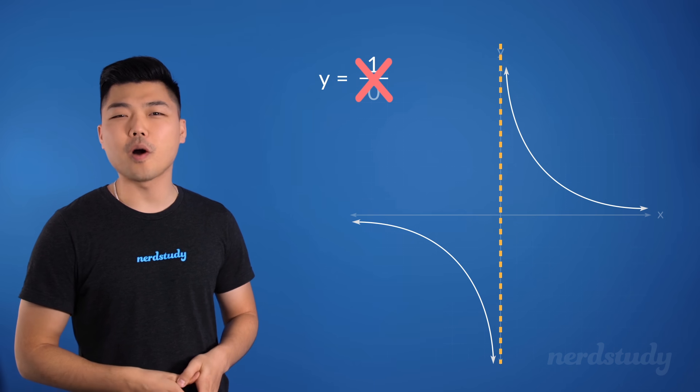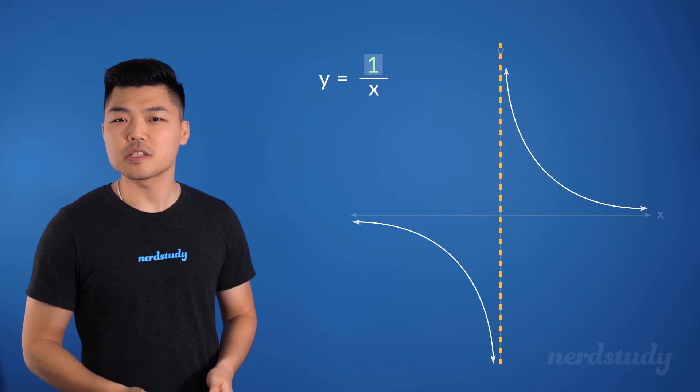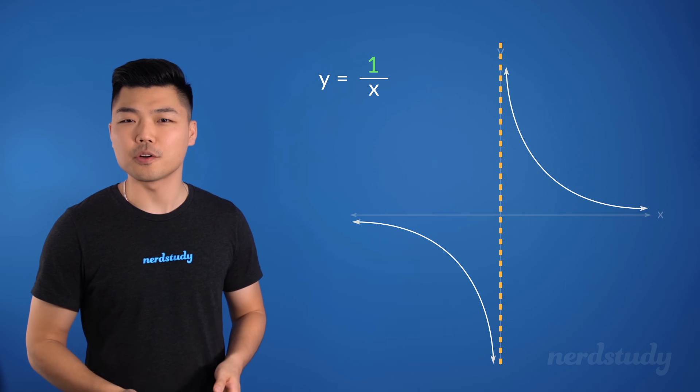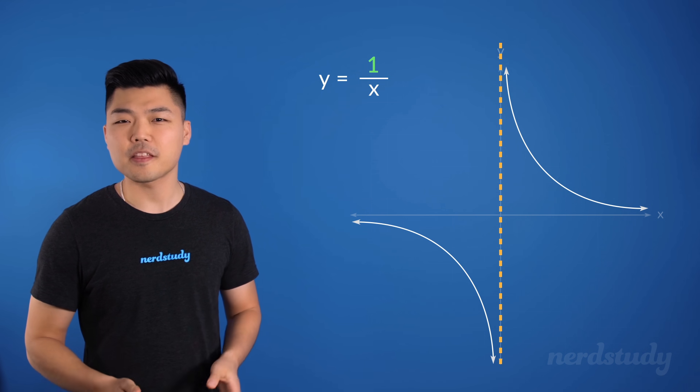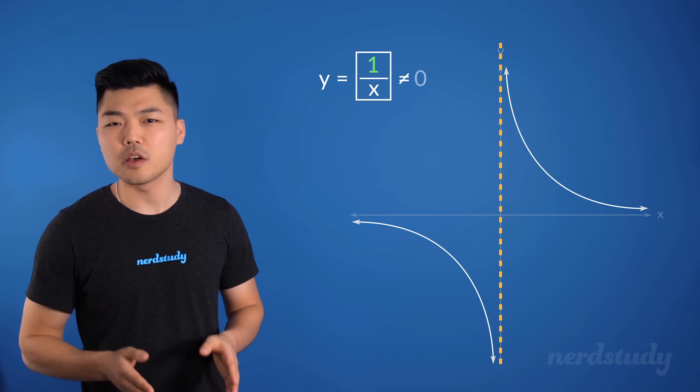this would make the y-axis an asymptote. Also, since the numerator is equal to 1, and since a fraction can only ever equal 0 when the numerator is equal to 0, we know for a fact that this entire number on the right side would never equal 0.